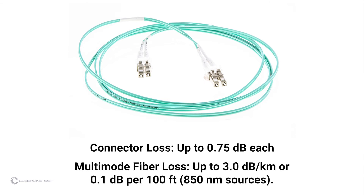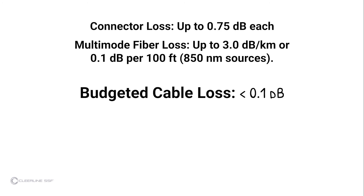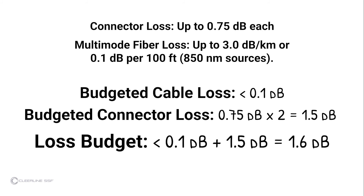Single-mode fiber loss is calculated at an average loss of 1.0 dB per kilometer for 1310 nanometer sources, or roughly 0.1 dB per 600 feet. For multimode fiber, the loss is about 3.0 dB per kilometer for 850 nanometer sources, or 0.1 dB per 100 feet. In this video, the cable under test is quite short, so the cable loss calculation is less than 0.1 dB. The loss calculation for the connectors is 1.5 dB (0.75 dB per connector times 2 connectors). The test result is less than 1.6 dB, so the cable passes industry standards for link loss.